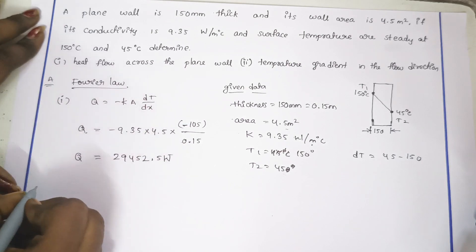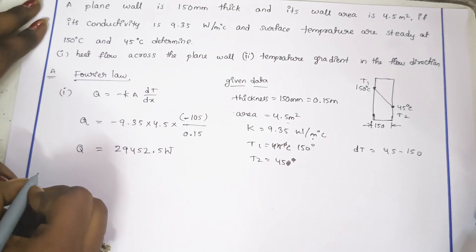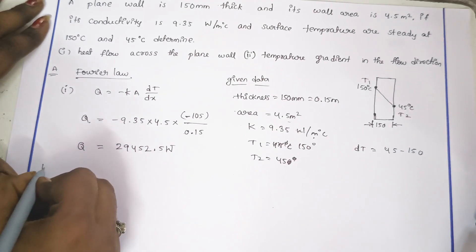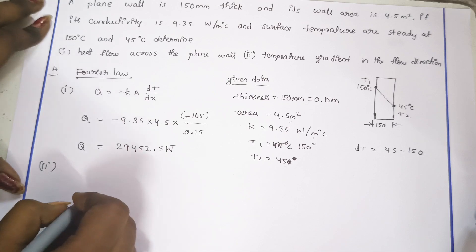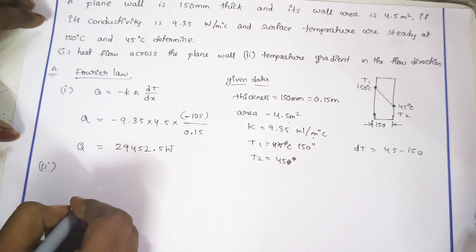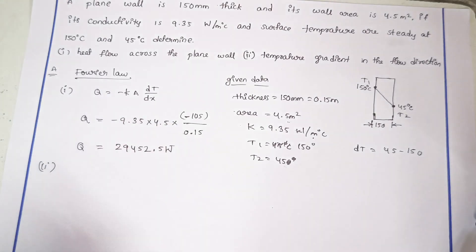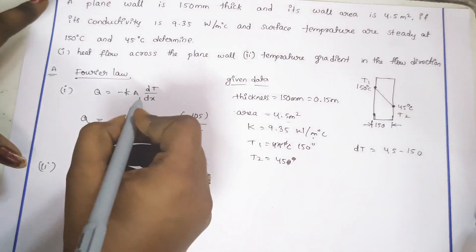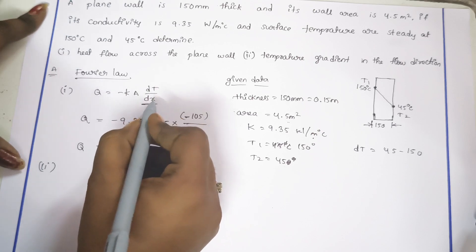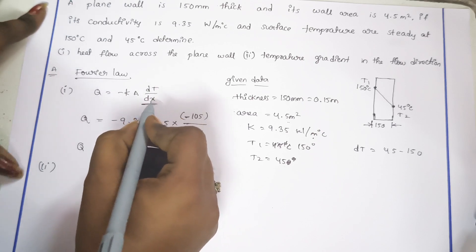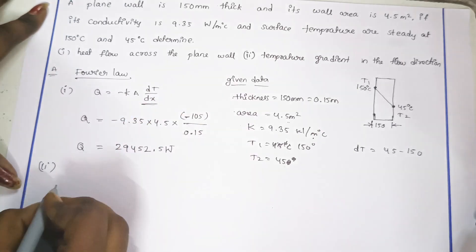The heat flow across the plane wall is computed. Next, we find the temperature gradient in the flow direction. The temperature gradient in the flow direction is dT by dx.